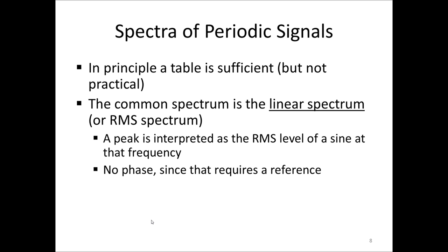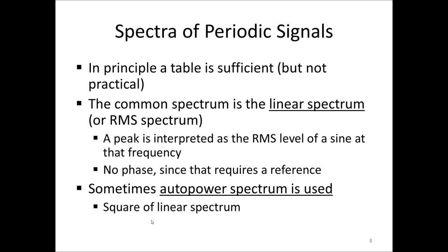The common spectrum we use for periodic signals is called the linear spectrum or RMS spectrum. This spectrum typically has an interpretation such that a peak is interpreted as the RMS level of a sign at that frequency. It does not have a phase, since phase requires a reference, and we are talking about spectra so far of only one signal. Sometimes we also use a spectrum called the autopower spectrum, which is simply the square of the linear spectrum.